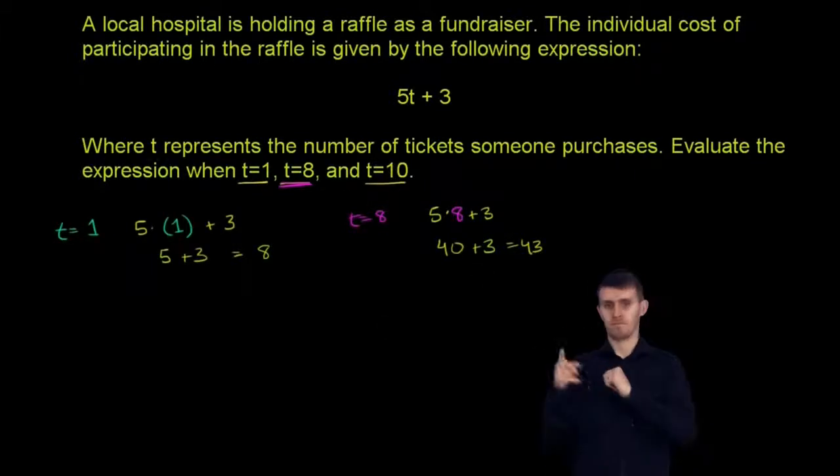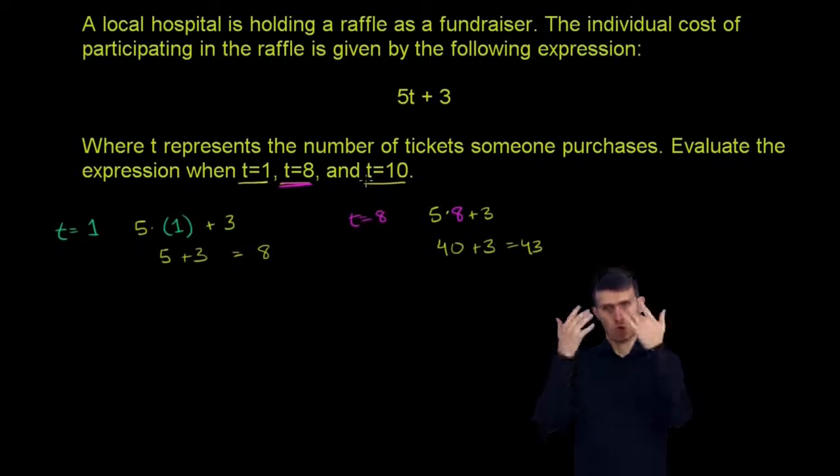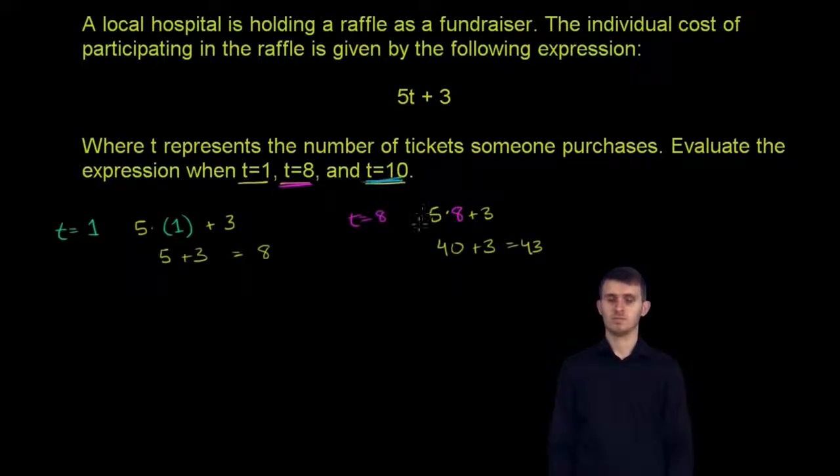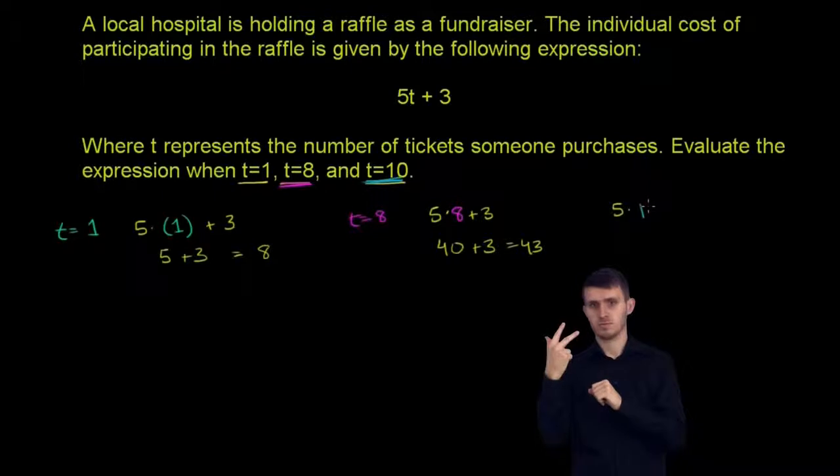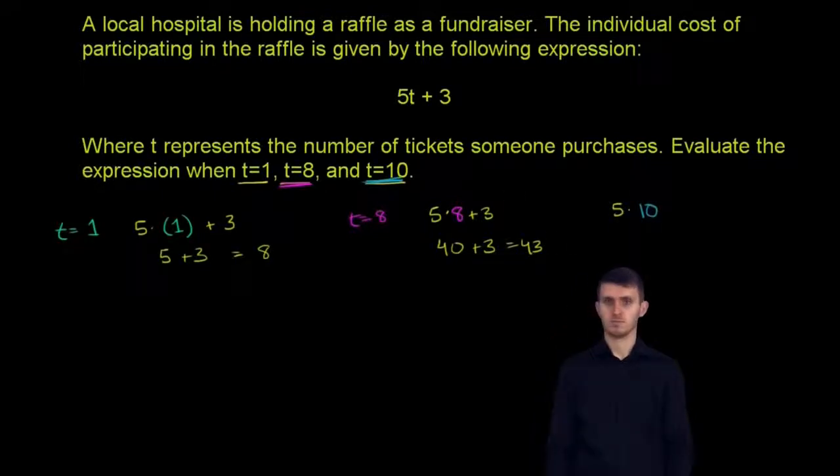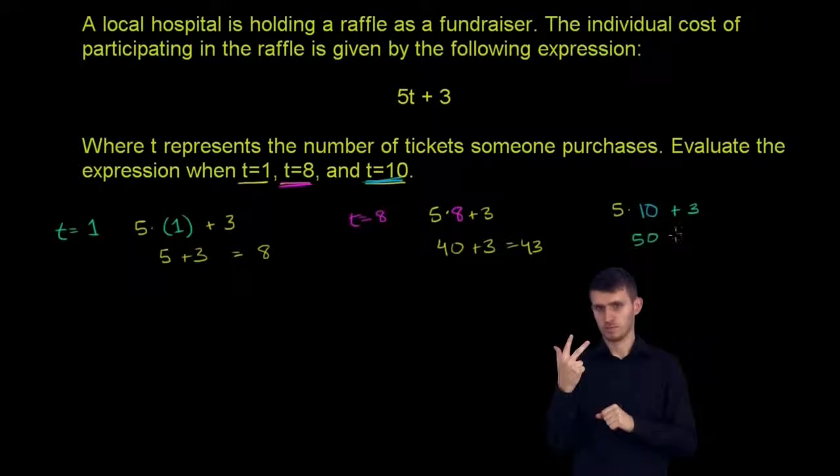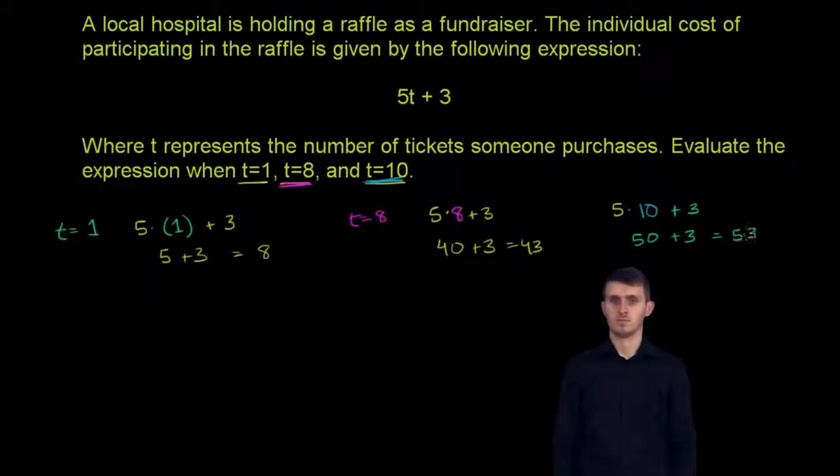And so we have the last situation with t is equal to 10. So we have 5 times 10. So 5t is 5 times 10. Instead of a t, we put a 10 there. 5 times 10 plus 3. 5 times 10 is 50, and then we're going to add 3 to that. And that is equal to 53.